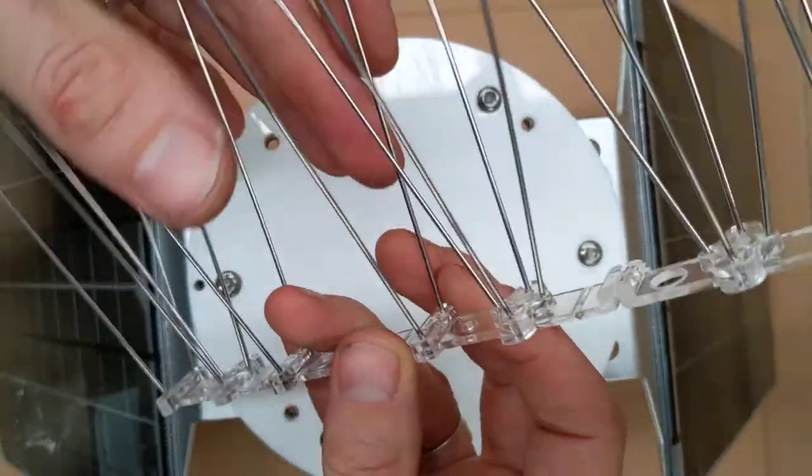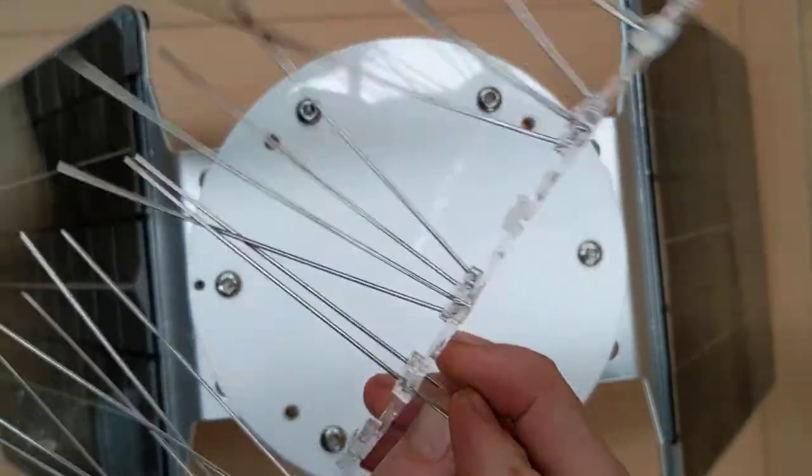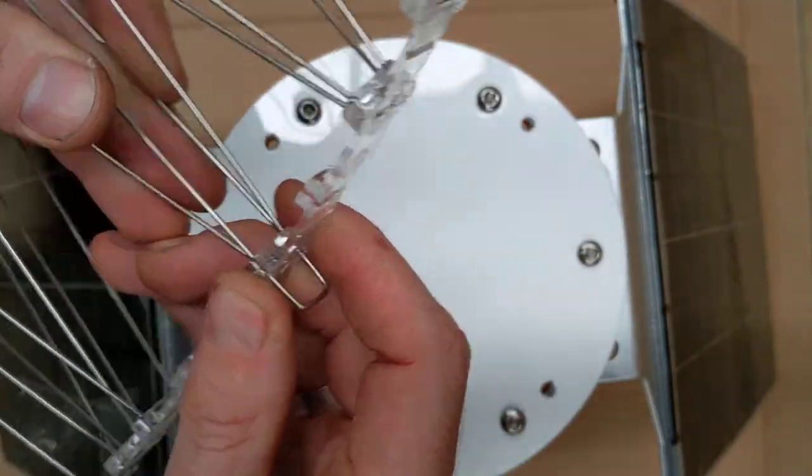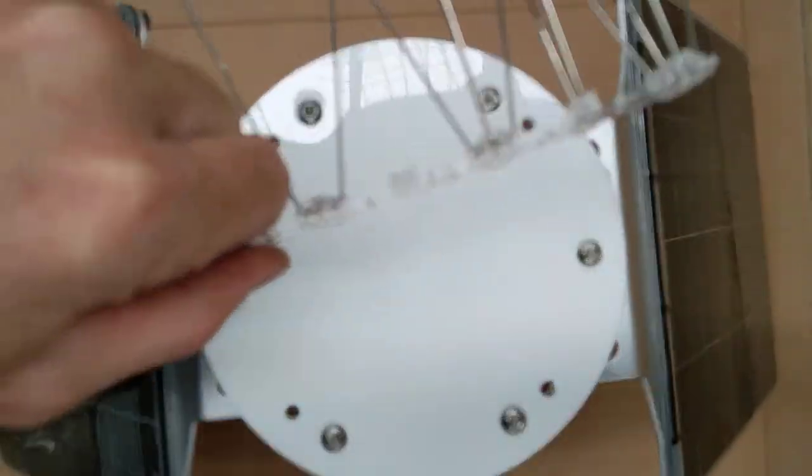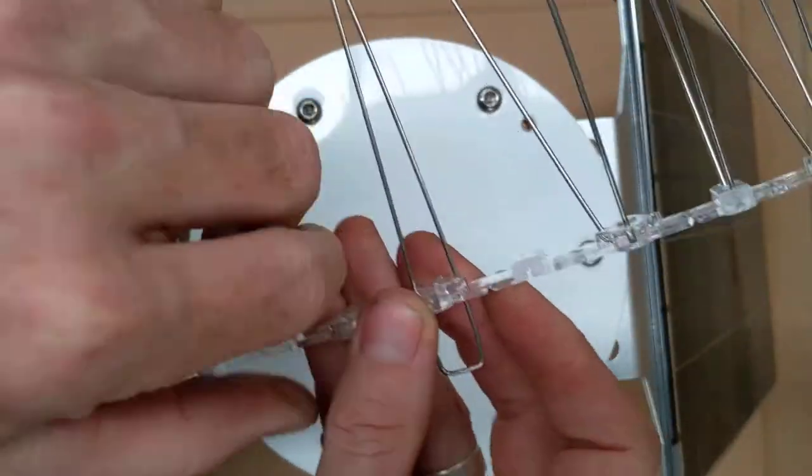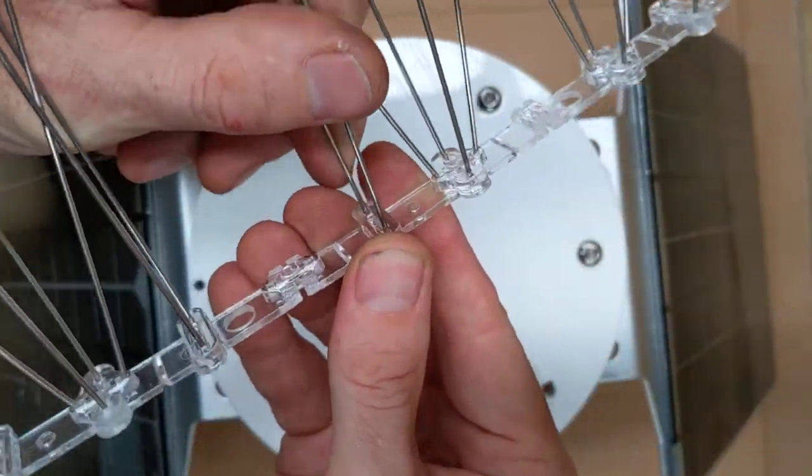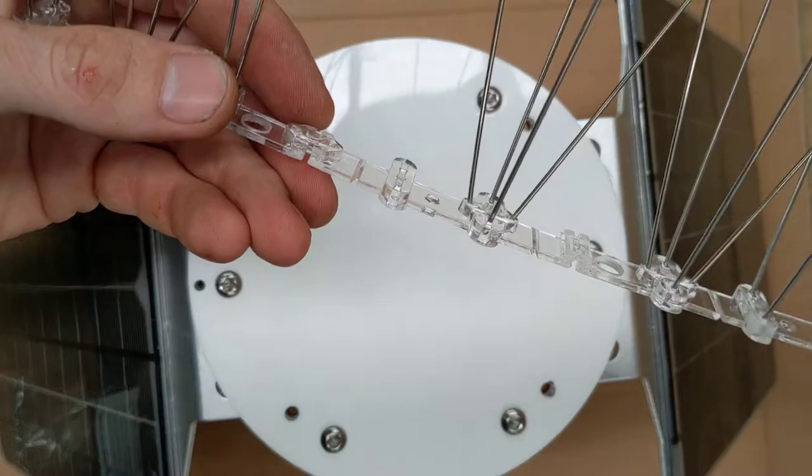So all you do is you squeeze them together and push them out. And you can throw these away because they're not much use for anything else. They are nice spring steel, but not much use for anything else. So just pop the other one out as well.